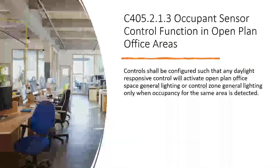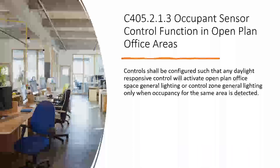Controls shall be configured such that any daylight responsive controls will activate the open office space general lighting or the control zone. Daylight harvesting takes precedence over the occupancy sensor — if the occupancy sensor is only allowed to turn it to 50% but the daylight photo control says we only need 30% output to meet the required illumination level, it's going to stop at 30%. It won't go to 50%.